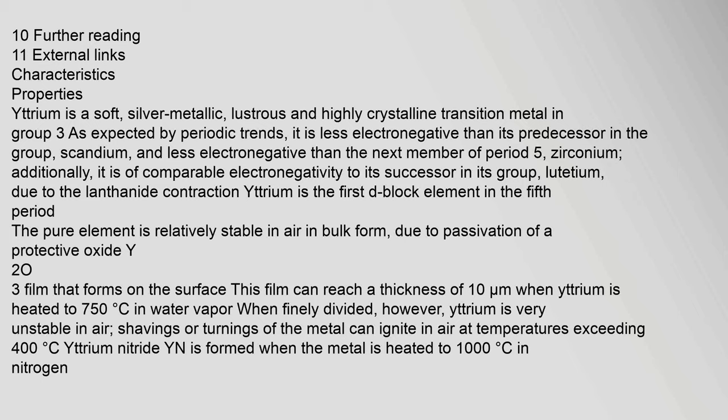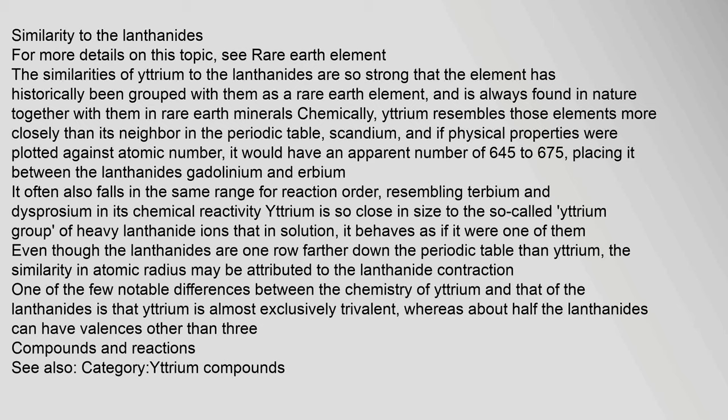The pure element is relatively stable in air in bulk form, due to passivation of a protective oxide Y2O3 film that forms on the surface. The similarities of yttrium to the lanthanides are so strong that the element has historically been grouped with them as a rare earth element. Chemically, yttrium resembles those elements more closely than its neighbor scandium, and if physical properties were plotted against atomic number, it would have an apparent number of 64.5 to 67.5, placing it between the lanthanides gadolinium and erbium. Yttrium is so close in size to the heavy lanthanide ions that in solution it behaves as if it were one of them.